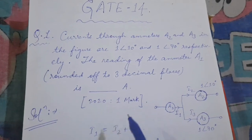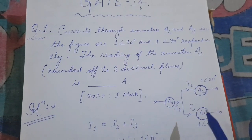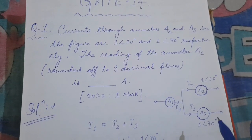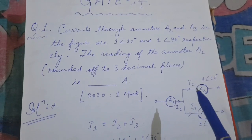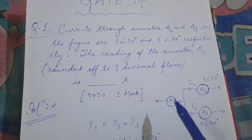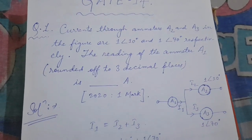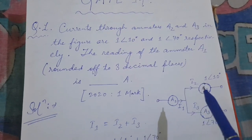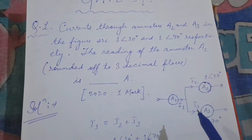Here we have three ammeters A1, A2, and A3. The currents are given in polar form — the values of I2 and I3. Ammeter A1 measures current I1 flowing through it. Applying KCL, Kirchhoff's Current Law: the sum of incoming currents equals the sum of outgoing currents. Therefore, I1 is equal to I2 plus I3.